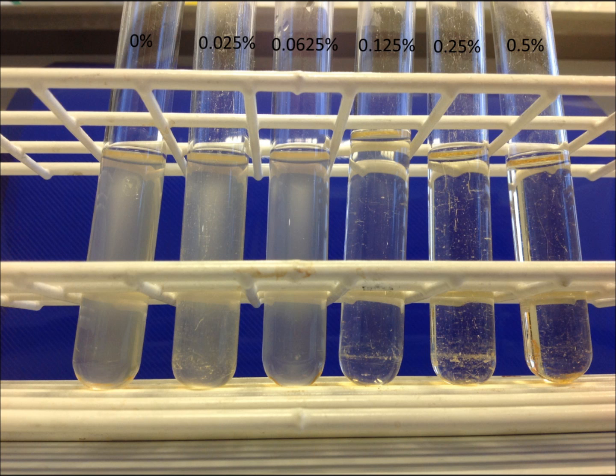All you need to do is to take a loop full out of each of the tubes and to streak them onto an agar plate. If there are live bacteria in there then you'll get some growth on the plate.